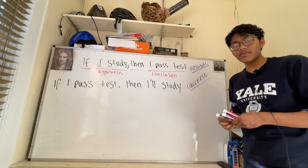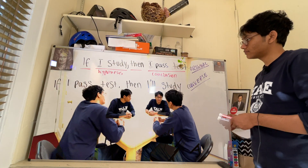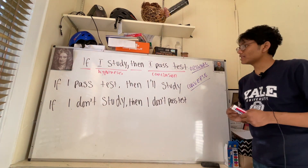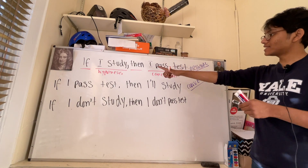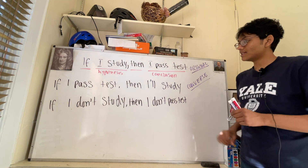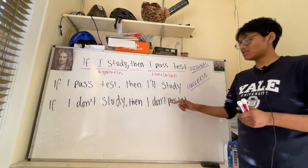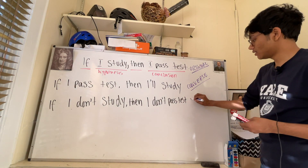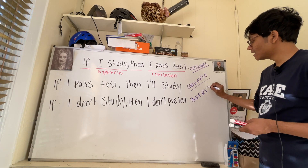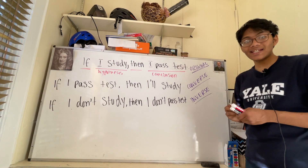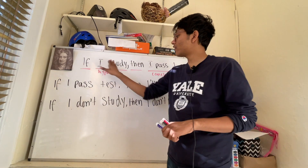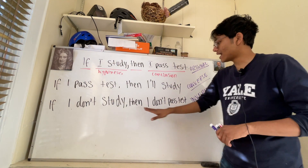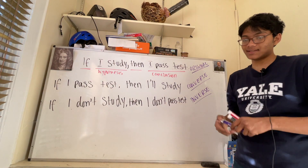The next robot says: if I don't study then I don't pass the test. The original statement said if I study then I pass the test. This one says if I don't study then I don't pass the test. This is called the inverse of the original statement. It's called the inverse because we negated the hypothesis and we negated the conclusion — instead of 'I study' we say 'I don't study,' and instead of 'I pass the test' we say 'I don't pass the test.'